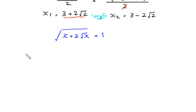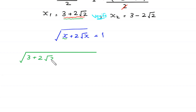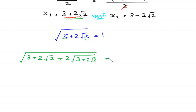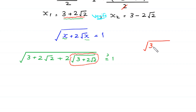First we substitute x₁ equals 3 plus 2√2 into the original equation: square root of (3 plus 2√2) plus 2 times square root of (3 plus 2√2), and we check whether this equals 1.